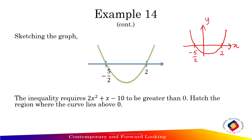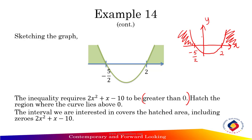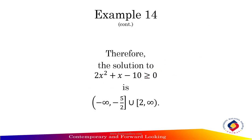The inequality requires 2x² + x - 10 to be greater than or equal to 0, meaning above the x-axis where y ≥ 0. Shade the region where the curve lies above 0. The interval covers the shaded area including the zeros of 2x² + x - 10. Since the inequality is ≥ 0, use filled-in circles. Therefore, the solution is (-∞, -5/2] ∪ [2, +∞).